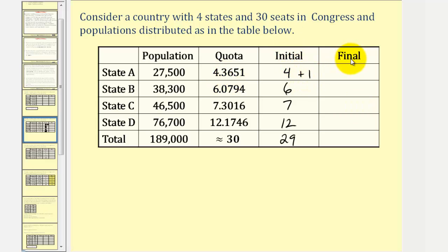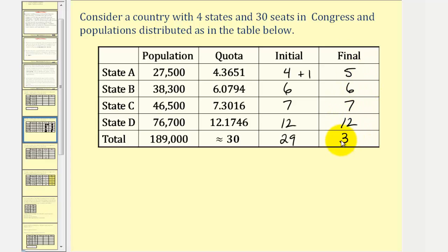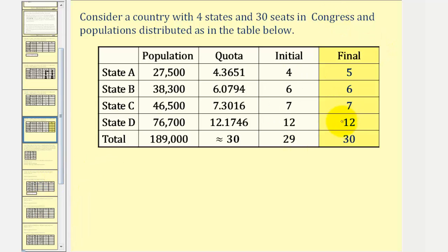For the final apportionment, state A receives five seats, state B receives six, state C receives seven, and state D receives twelve. Notice the total is 30 — we've used all of the seats in Congress. And here's the result in a nice table.